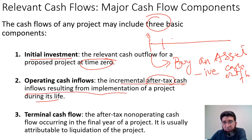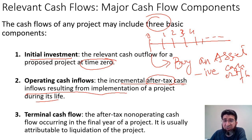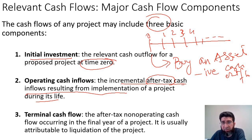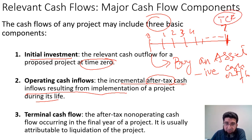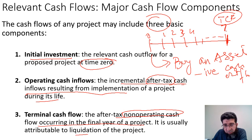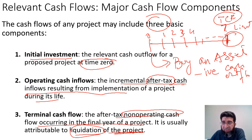Once we have bought the asset, we should be getting certain inflows at different time periods. It is not necessarily immediate — it could start after a few years or immediately. The third component is terminal cash flow. For example, in a seven-year project, the terminal cash flow at the end is the after-tax non-operating cash flow occurring in the final year, usually attributable to liquidation of the project. At that point, we liquidate and sell the assets; the proceeds flow back into the company as an inflow.